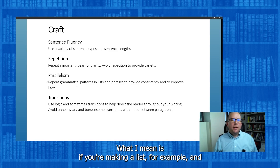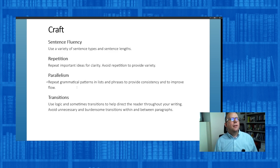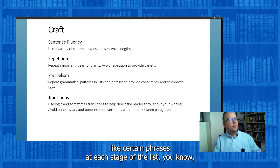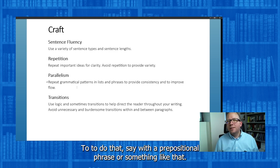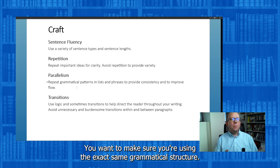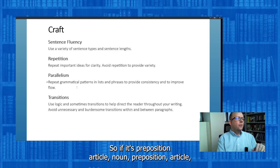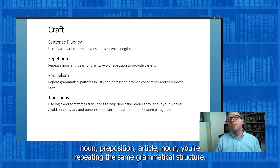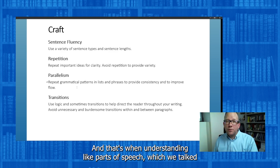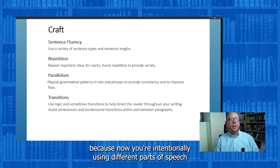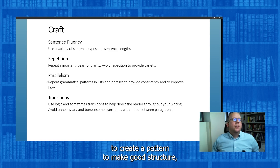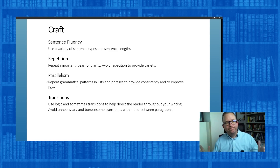What I mean is: if you're making a list with certain phrases at each stage, you want to make sure you're using the exact same grammatical structure. So if it's preposition, article, noun — then preposition, article, noun — then preposition, article, noun — you're repeating the same grammatical structure. That's when understanding parts of speech, which we talked about earlier in the course, comes back, because now you're intentionally using different parts of speech to create a pattern and make a good structure in your writing.